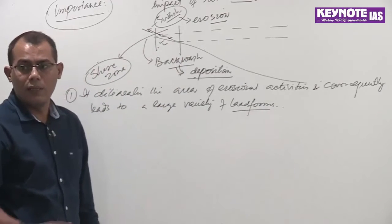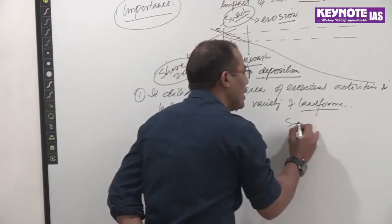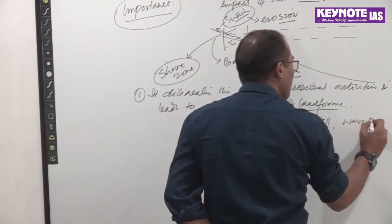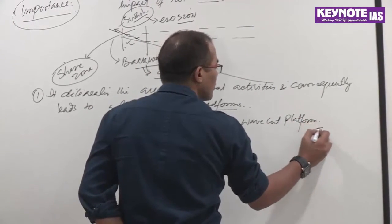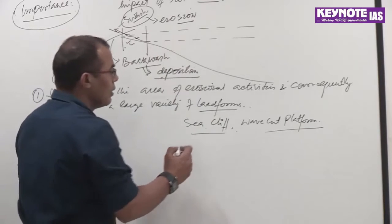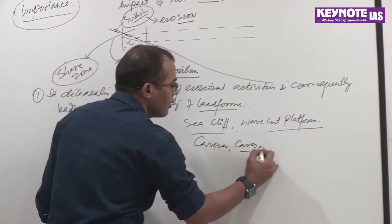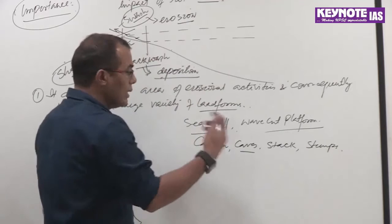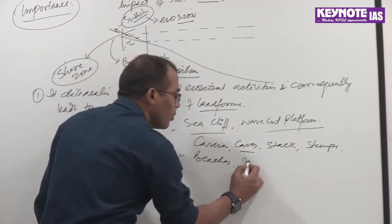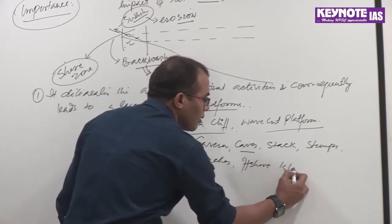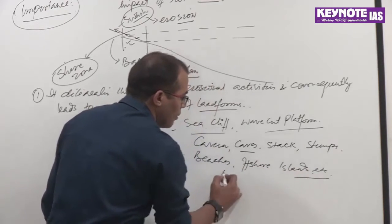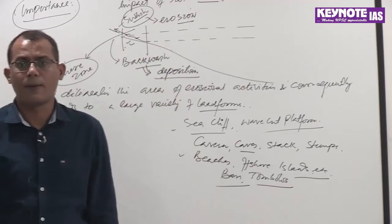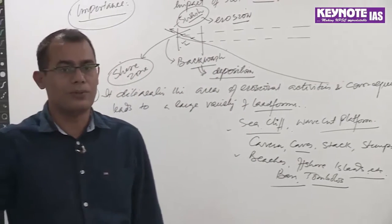Examples of erosional landforms include sea cliffs, wave-cut platforms, caves, caverns, stacks, and stumps. Depositional landforms include beaches, offshore islands, bars, and tombolos — all mentioned in NCERT. These are the landforms produced because of wave action.